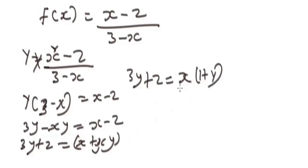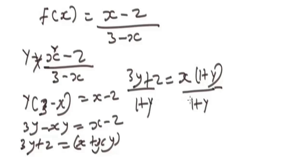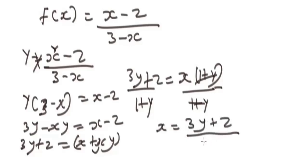At this point, divide both sides by (1 + y). So the new expression is x = (3y + 2) over (1 + y). Remember that for this kind of rational function, the denominator (1 + y) cannot equal zero.